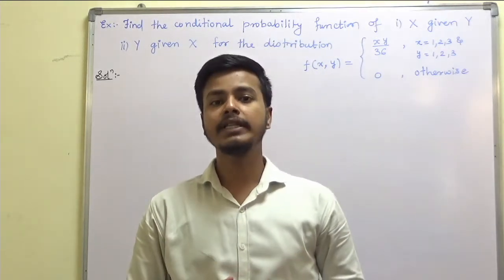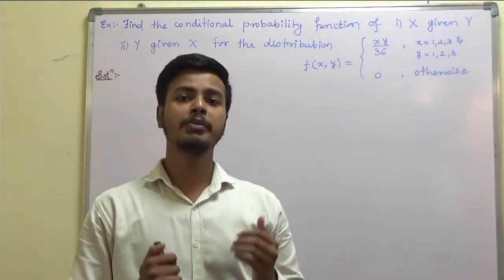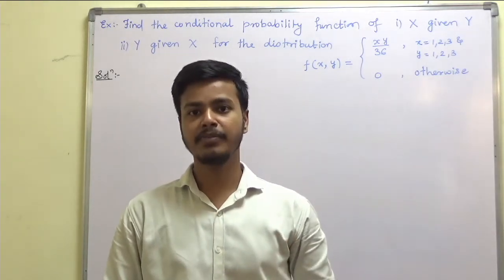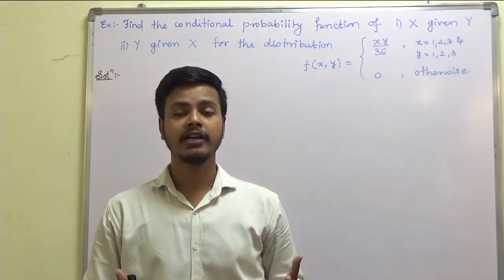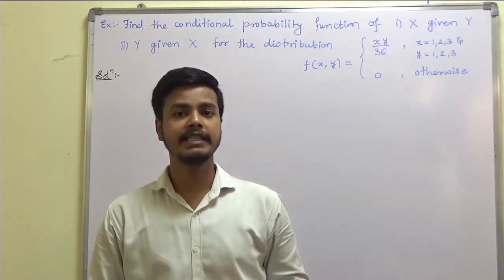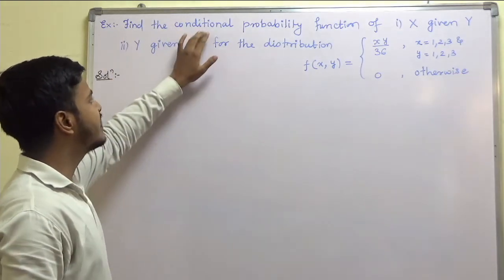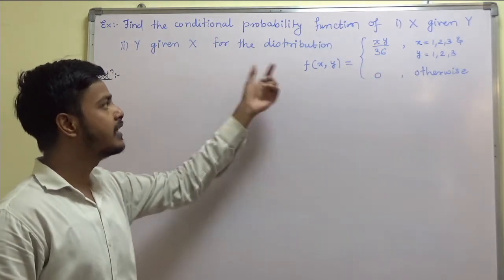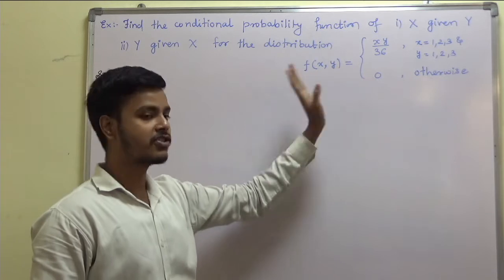Hello everyone, welcome to this learning video where we are going to take an example on conditional distribution. To be precise, we are going to take an example on discrete random variables. We have already seen the definition of conditional distribution for both continuous and discrete random variables. Here we are going to focus on the discrete case. The problem asks us to find the conditional probability function of X given Y, and Y given X, with the joint probability function provided.